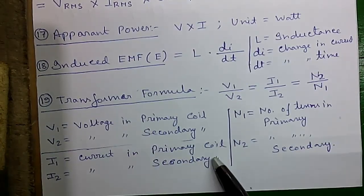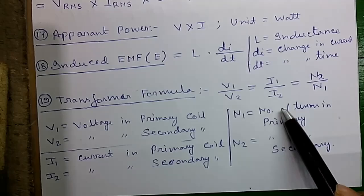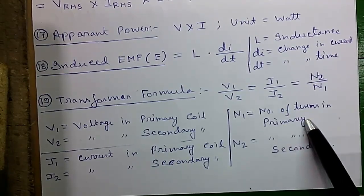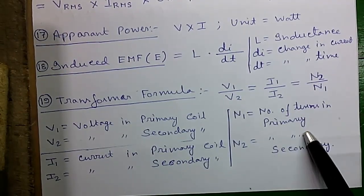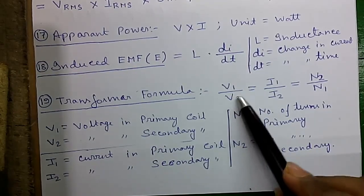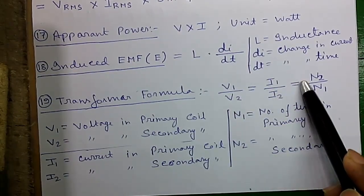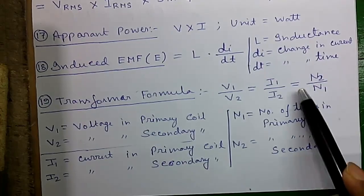I2 is the current in secondary coil, and N1 is the number of turns in primary coil and N2 is the number of turns in secondary coil. So remember: it is V1 by V2 equals I2 by I1 equals N2 by N1. That is the trick.